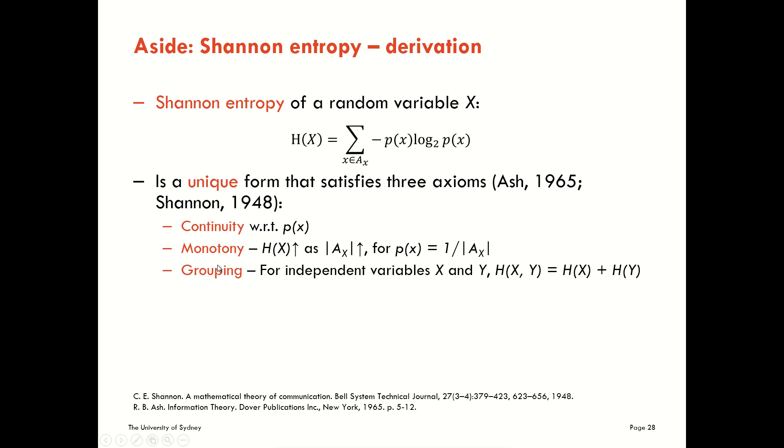Now, it's important that just writing down these three axioms leads us exactly to this function and no other. Now, of course, I should point out that it's not specifying the value of the base of our logarithm, but it is specifying the form. Changing the base of the logarithm simply changes the units that we're measuring this in. Otherwise, this is a unique form that satisfies these very simple, straightforward axioms that we're not arguing with.